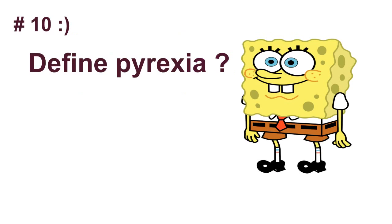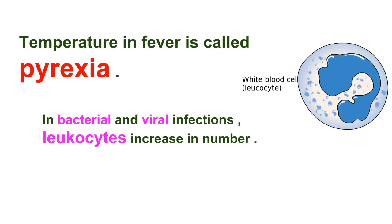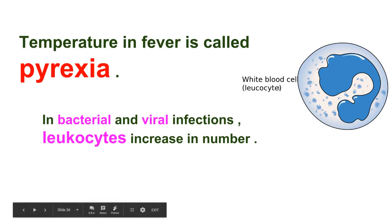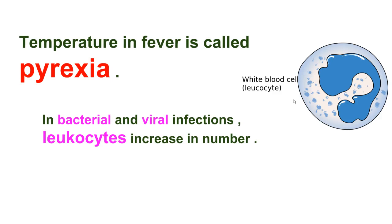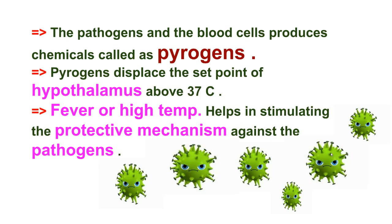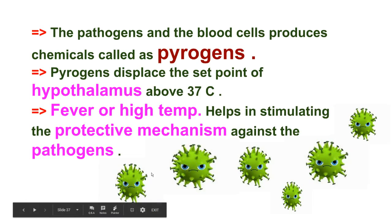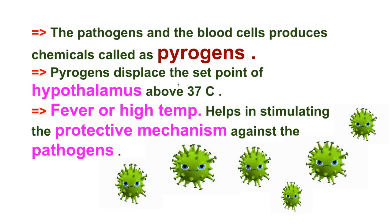Question number ten: define pyrexia. Fever or high temperature is called pyrexia. In bacterial and viral infections, leukocytes — the white blood cells, part of our immune system — increase in number. The pathogens and blood cells produce chemicals called pyrogens. Pyrogens displace the set point of the hypothalamus above 37 degrees centigrade, which is our normal body temperature. Fever helps in stimulating the protective mechanism against the pathogens. I hope this video was helpful. Please like, share, comment, and subscribe. Thanks for watching — wish you all the best.